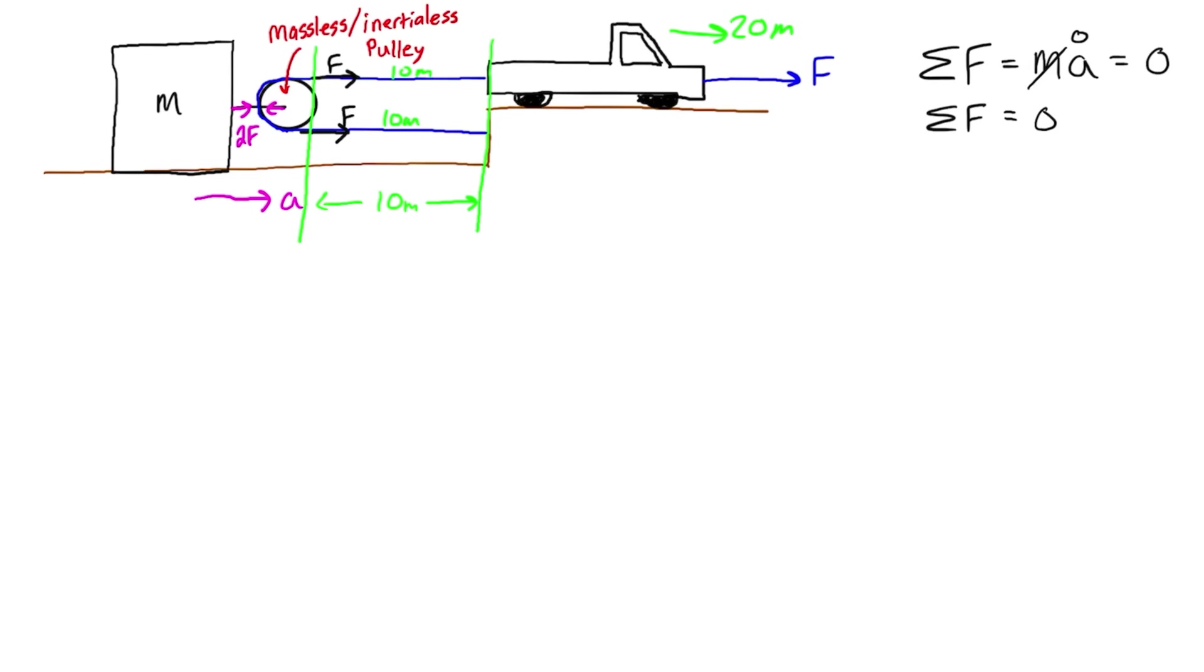The displacement of the truck is going to be double that of the displacement of the mass block. Because of that and the relation through all the kinematic equations that means that the acceleration of the truck is also going to be two times the acceleration of the block so it's going to be equal to 2a.